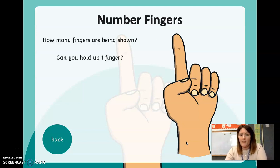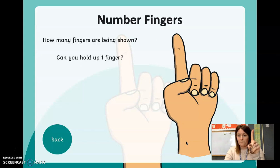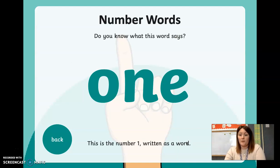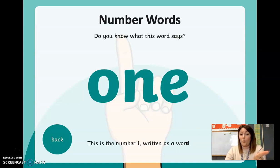Can you have a practice at that? One. So do you know what this word says? I just showed you the different ways of showing the number one. This says 'one' here — this is the number one written as a word.